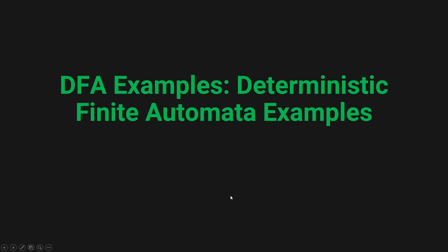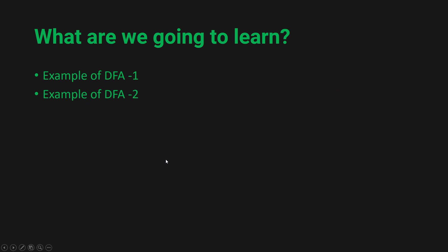Hey guys, welcome to another theory of computation tutorial. Today we'll be solving some DFA examples — that is, deterministic finite automata examples. We'll look at two examples. If you don't know what DFA is, I've already made videos on that. You can watch them via the link in the description or the I button, and then come back for these examples.